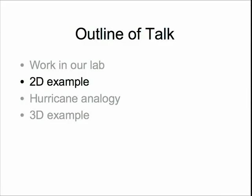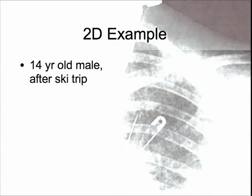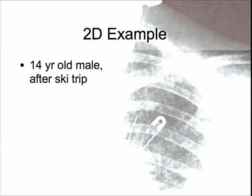I'll start with a 2D example. Here is a 14-year-old male before a ski trip, and this is an image of him after the ski trip. What I want you to note is the fracture in the clavicle. The arm is being held in a sling, and you can see a safety pin from that. Here's an x-ray, a 2D image of this fracture. That 14-year-old is my 14-year-old, so this is an actual anecdotal story.